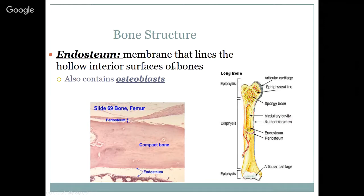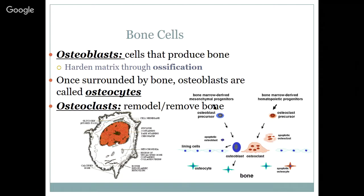The endosteum is the membrane that lines the hollow interior surface of bones, and it also contains osteoblasts — the cells that make bone and lay down calcium. Osteoblasts are those cells that produce bone; they harden the matrix of cartilage, protein, and polyglycans through ossification. Once surrounded by bone, osteoblasts are then referred to as osteocytes. Osteoclasts remodel and remove bone — they remove the calcium and allow the bone to shift or remodel, and then the osteoblasts will take over and make more calcium.